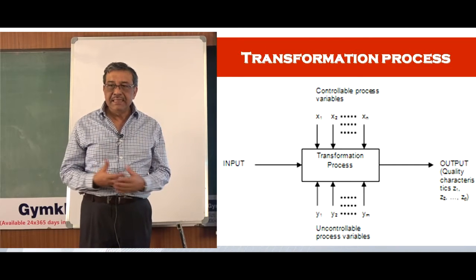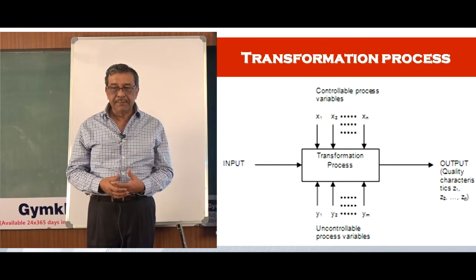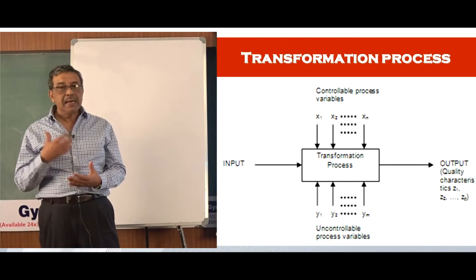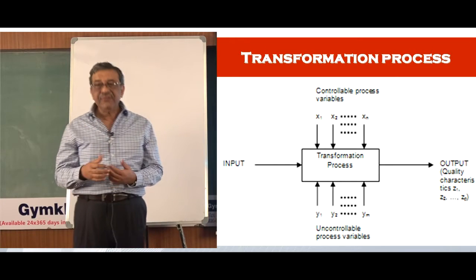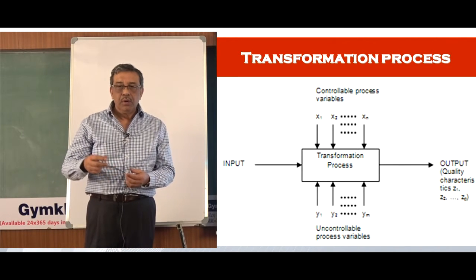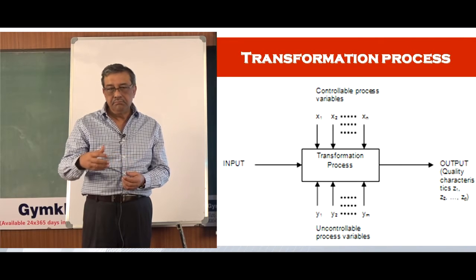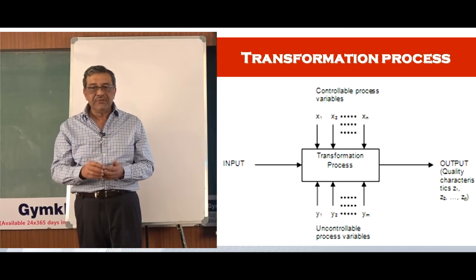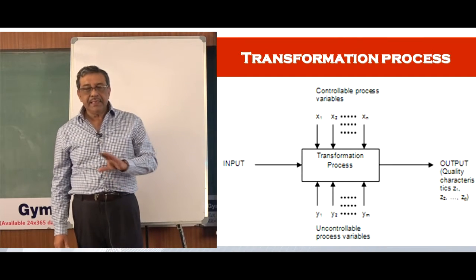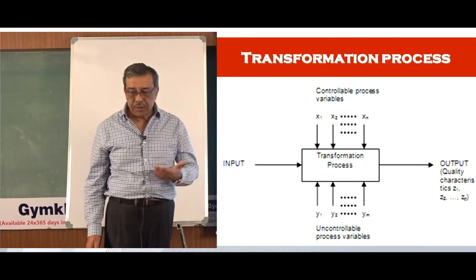Uncontrolled variables are things like vibration of a machine, material qualities which are input to the system — sometimes we will not be able to control these very well — or noise in the system. These are all uncontrolled variables. Controlled variables are things which are in our control. For example, we can switch on a valve to put in some gas or make a flow through LPG. By controlling valves or gates, we can control these things. The idea is that in spite of variation in uncontrolled variables, we want the output to remain the same — the desired output.